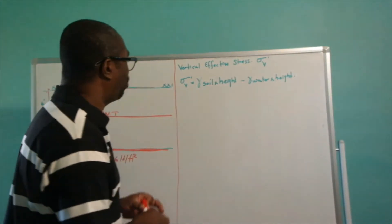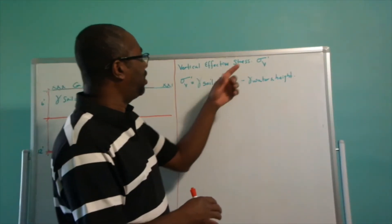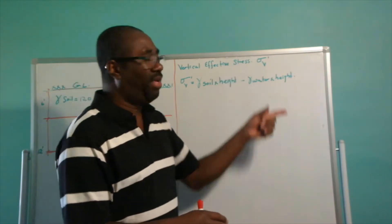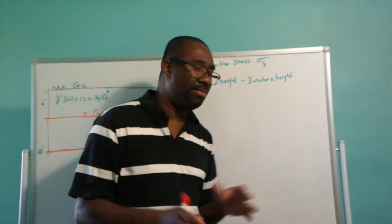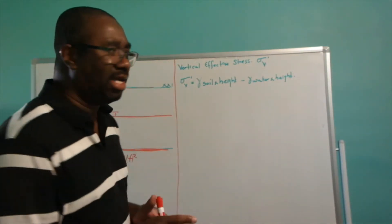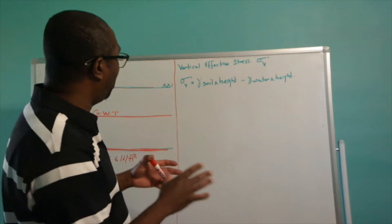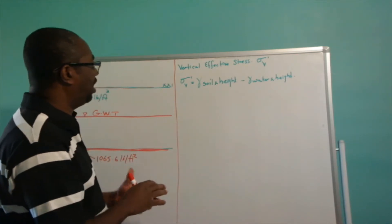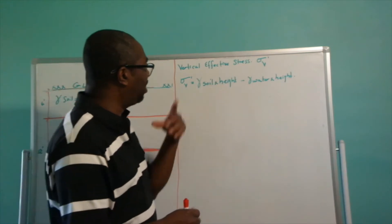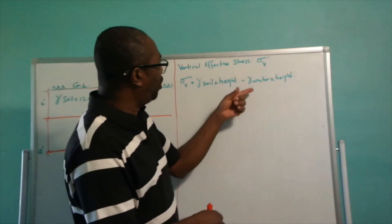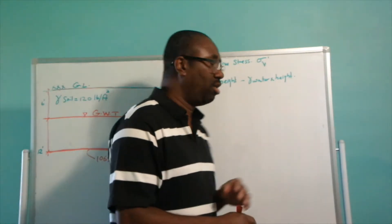The vertical effective stress is denoted by the symbol sigma-v-prime, or you can refer to it as stress-v-prime. To calculate the vertical effective stress: it is calculated by the weight of the soil times the height of the soil, minus the weight of the water times the height of the water.